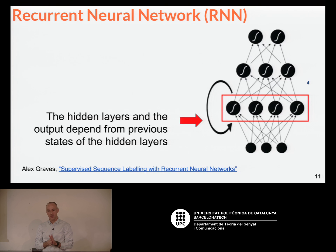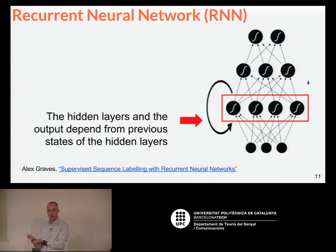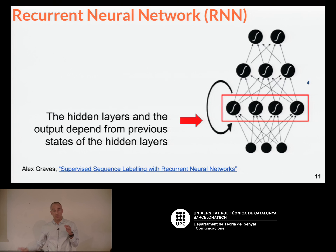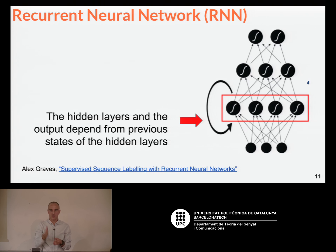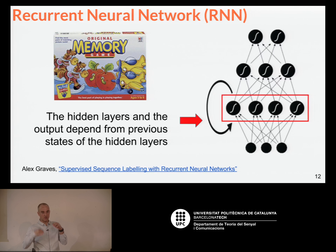A type of network we haven't talked about yet is recurrent neural networks. In the previous architectures, you have input data and forward-pass it to particular labels, then do backpropagation to adjust the weights. What's new with recurrent networks is that the hidden layers and output not only depend on the input, but also on the previous states of that layer. So there's a temporal sequence — you must think about time steps, and the network has some sort of memory of its previous state.